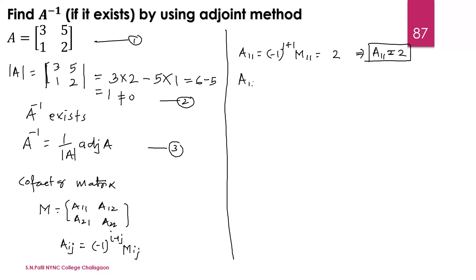Now A12: A12 is minus 1 raised to i plus j, where i is 1 and j is 2, into M12. That is minus 1 raised to 3, which is minus, and M12 means the minor of the first-row second element, which is 5. The minor of 5, obtained by deleting its row and column, is 1. So we get A12 is equal to minus 1.